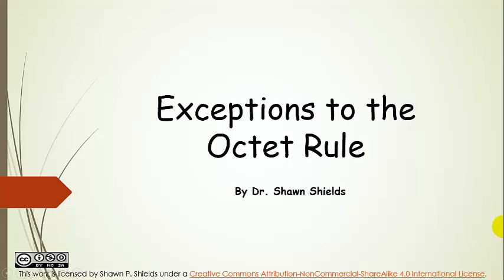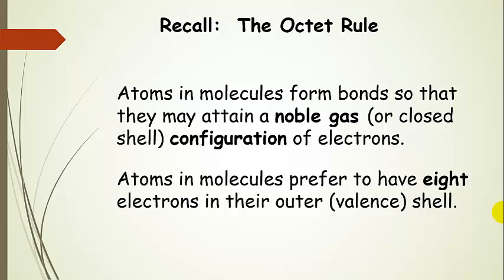Exceptions to the octet rule. We've spent quite a bit of time discussing bonding and the reasons why atoms might want to form bonds and form ionic compounds or molecules, covalently bonded molecules.